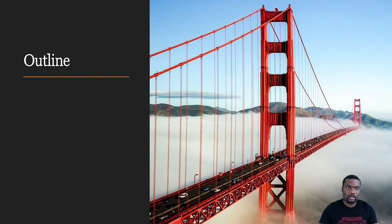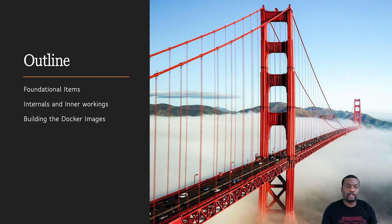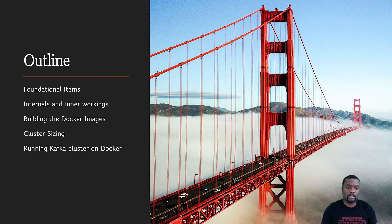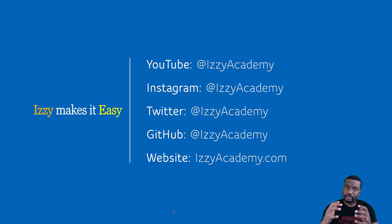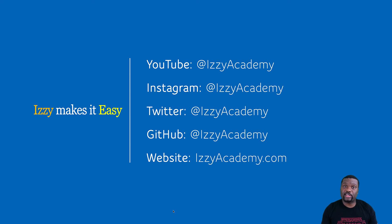In summary, we've covered the foundational items and how the architecture works internally, how to build the Docker images, and the cluster sizing. In the next video, I'm going to show you how to run the three clusters — both in legacy mode and in KRaft mode without Zookeeper. Thank you very much for your time today. If this content has been useful to you, please subscribe to the channel, like the video, and share the channel with others who would be interested. And don't forget to check out my website for the course on data processing. I will see you in the next video.